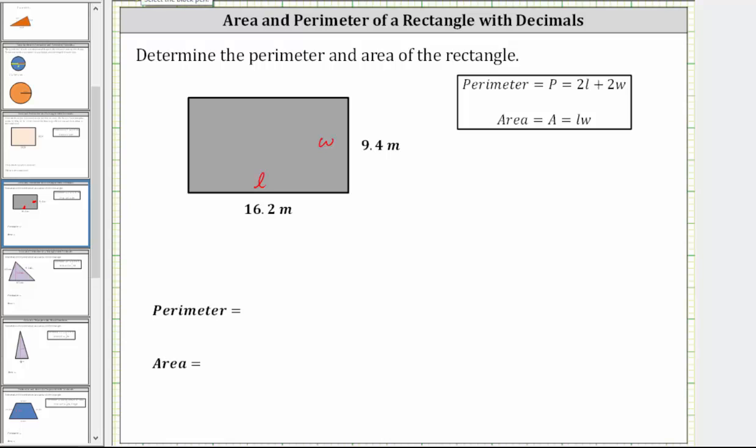So let's label the lengths of the opposite sides. We know this length has a length of 16.2 meters. We know this side has a length of 9.4 meters. So now if we think about walking around the rectangle, the perimeter is 16.2 meters plus 9.4 meters plus 16.2 meters plus 9.4 meters.